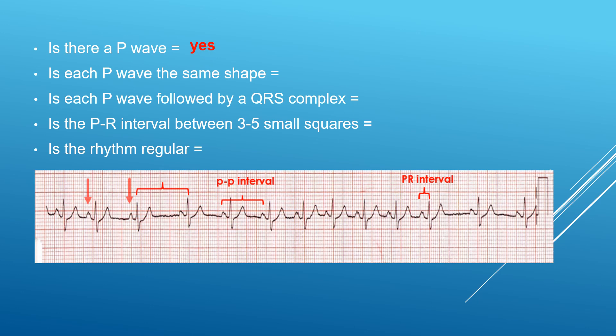Let's summarize: Is there a P wave? Yes. Is the P wave of the same morphology? Yes, and each P wave is sinus in nature. Every P wave is followed by a QRS. The PR interval is between three to five small squares. And the rhythm is not regular — so what does this suggest?